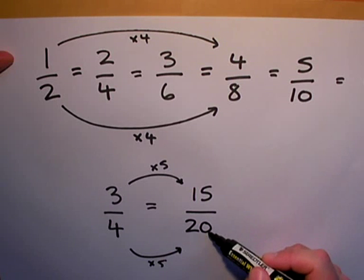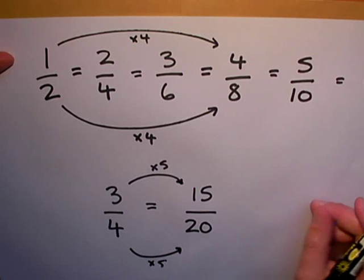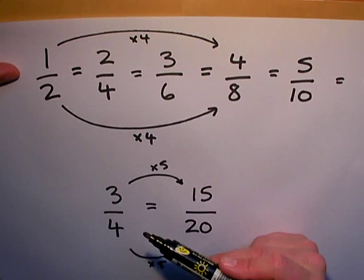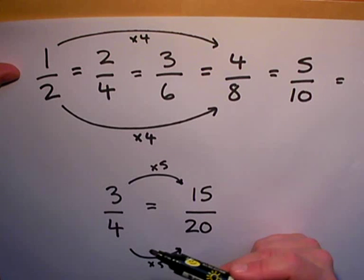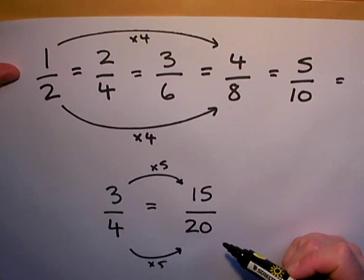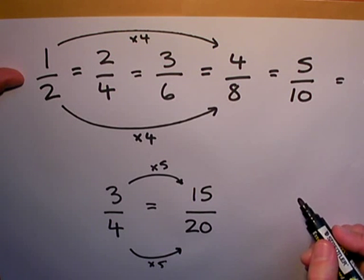There I have an equivalent fraction: fifteen out of twenty is the same as three quarters. Now I can do this to all fractions. As long as I'm multiplying the top number and the bottom number by the same number, I end up with an equivalent fraction. You can think of this, if you like, as multiplying up or cancelling up.